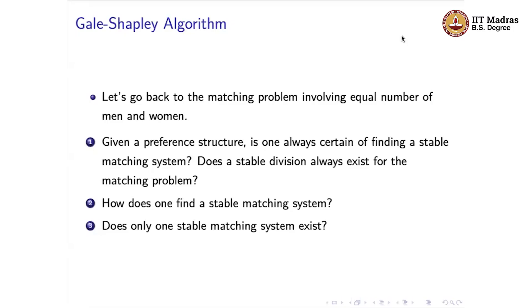There are several questions that naturally come up. One such question is: given the preference structure — the information about how each man ranks the different women and how each woman ranks the different men — is there a way of always being certain of finding a stable matching? And more fundamentally, do we actually know whether a stable division always exists? Remember the answer for general pairing problems is not necessarily yes, because we saw the roommate problem where a stable division does not exist.